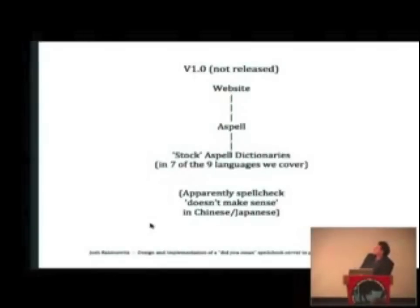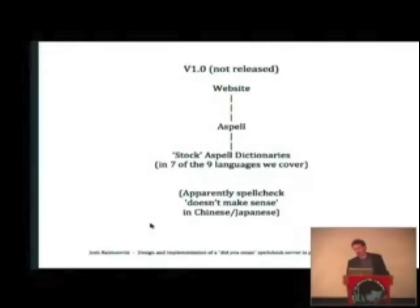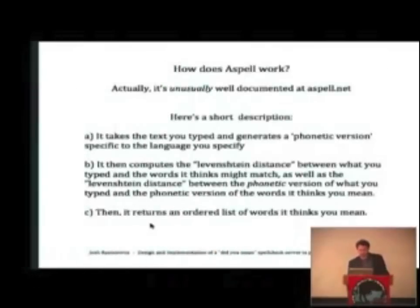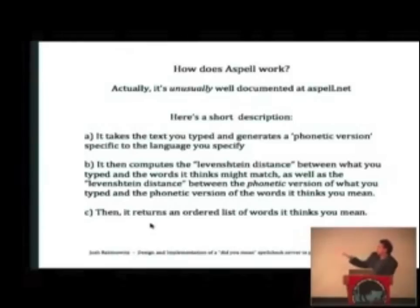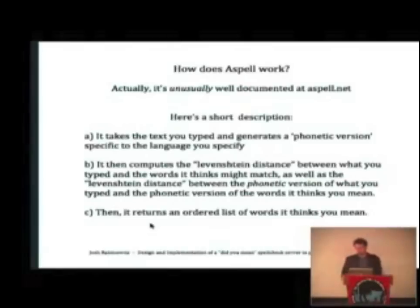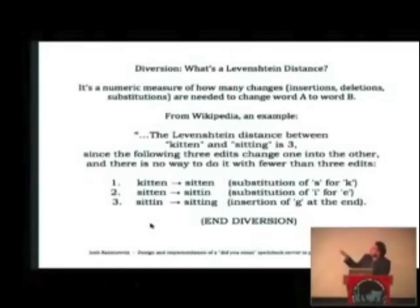The first iteration was basically: a user types a search into the website, we take each word and run it by ASPEL using the stock ASPEL dictionaries, and we took the top result for each word and showed the user that one. ASPEL takes the word you typed in, generates a phonetic version specific to the language you specify — it has different phonetization rules for different languages — and computes the Levenshtein distance between what you typed and the words it thinks might match, as well as the Levenshtein distance between the phonetic version of what you typed and the phonetic versions of the candidate words. It returns an ordered list of the words it thinks you meant.